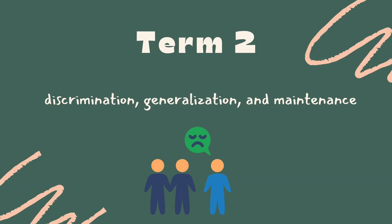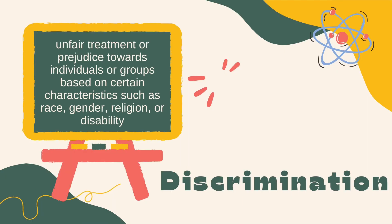Our second term is about discrimination, generalization, and maintenance. These are three concepts that play a significant role in shaping our perceptions and interactions with others. Discrimination is the unfair treatment or prejudice towards individuals or groups based on certain characteristics such as race, gender, religion, or disability. It involves making negative judgments or taking actions that deny equal rights and opportunities to others.